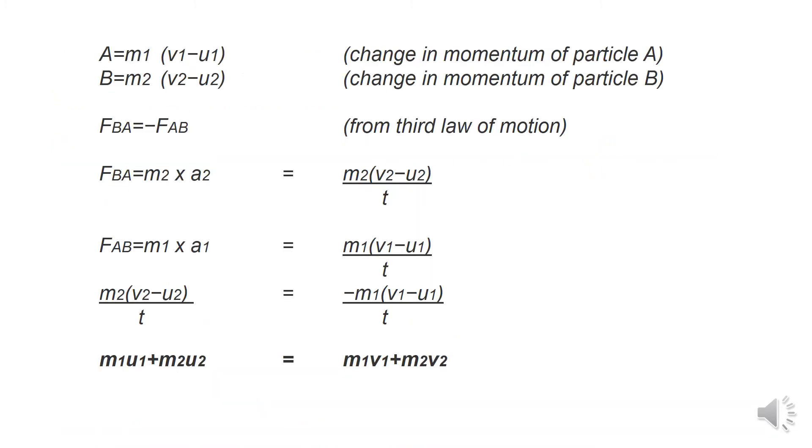Momentum mathematically can be set as mass times velocity. Now, if A equals M1 and B equals M2 and V1 U1 is the change in momentum or change in velocity and V2 U2 is also change in velocity.